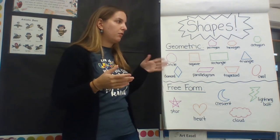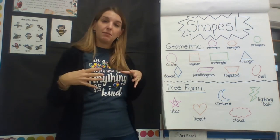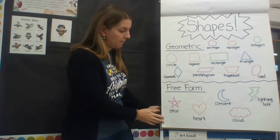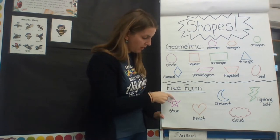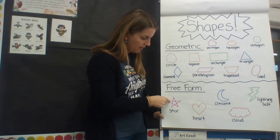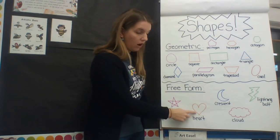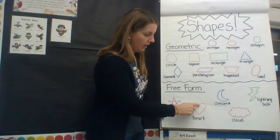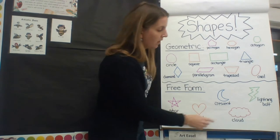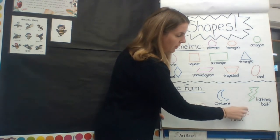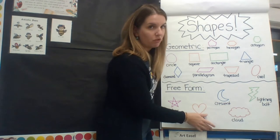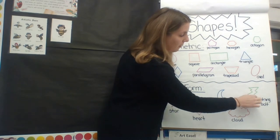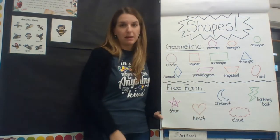But when you take some straight lines and some round lines and start combining them together, you get freeform shapes. A star is a freeform shape where you start from the top and go down, up, side, down, up. A heart is a freeform shape because the bottom is a little more straight and you get that round bump at the top. A cloud shape is freeform because clouds constantly change shape. A crescent, like a moon, or even a lightning bolt, which has a whole bunch of zigzag lines.